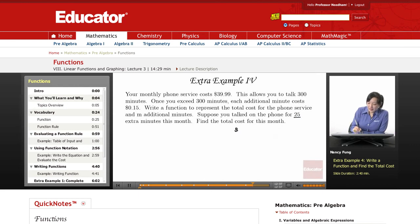You always pay $39.99 no matter what, and that's for your 300 minutes. We're assuming that you go over the 300 minutes. Each additional minute costs 15 cents.